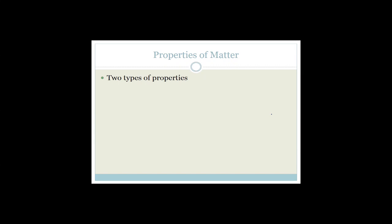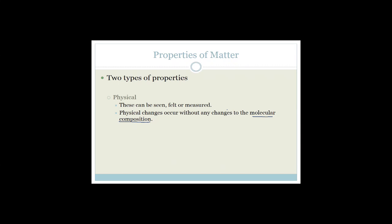Properties of matter are very important. There are two types of properties: physical properties and chemical properties. We're going to go through the different types of properties that matter has, because you need to be able to identify the different types of properties and also be able to explain them. Physical properties can be seen, felt, or measured. Physical changes occur without any changes to the molecular composition — we don't actually change the molecules at all. The molecular composition stays the same.